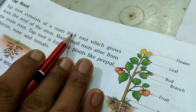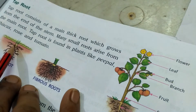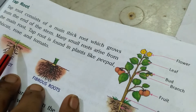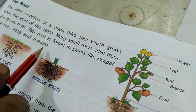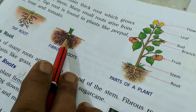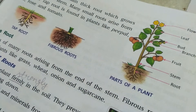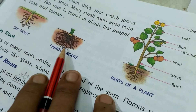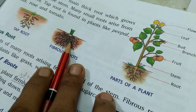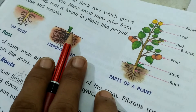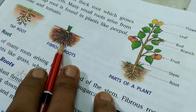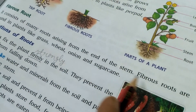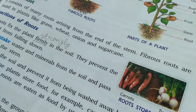Tap root consists of one main thick root that grows from the end of the stem, and many little small roots arise from this main root. Examples include peeple, hibiscus, rose, and tomato. In the case of fibrous root, there is no main root — lots of small roots arise from the end of the stem. Fibrous roots are found in plants like grass, wheat, onion, and sugarcane.